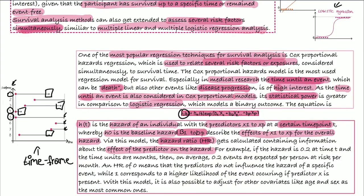Let's look at an example. If we have a hazard of 0.2 and the time unit month, this means that on average we expect 0.2 events per person at risk per month. If we have a hazard ratio of 0, this means that the predictors don't influence the hazard of a specific event, and 1 corresponds to a higher likelihood of the event occurring if predictor x is present.